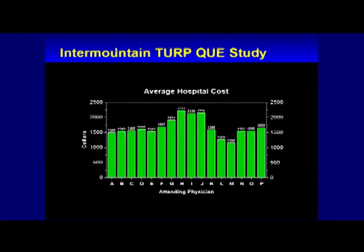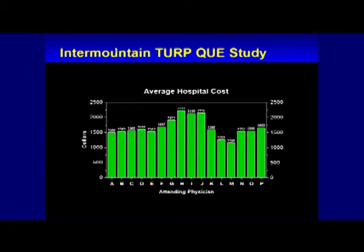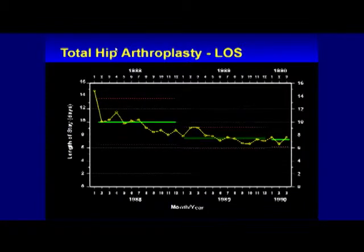It forced us to a process-level focus as opposed to a person-level focus. Instead of focusing on good physician, bad physician — what is the best way to perform this procedure for patients who would benefit from it? We took these data and fed them back to the physicians involved. Of course, we had to go through a little debate about whether the data were accurate, and resolved that. But then the idea that one of your colleagues is doing it differently and appears to be getting a good result — over a period of time, what we saw were massive reductions in variation.